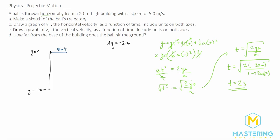Now that we know the ball is in the air for 2 seconds, we need to figure out how far from the base of the building it hits the ground. As the ball follows its parabolic trajectory, the x component of velocity stays exactly the same — it continues at 5 meters per second the entire time. So the horizontal distance is 5 meters per second times 2 seconds, which gives 10 meters. Checking units: meters per second times seconds leaves meters. The answer for part D is 10 meters.